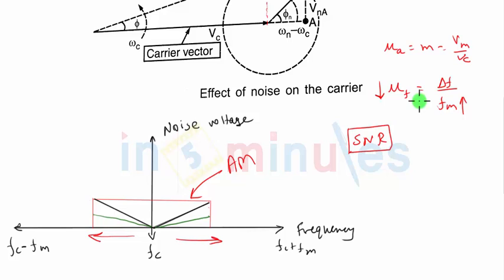So if the modulation index is low, the effect of noise will be more. That's the noise triangle, and it gives us the important conclusion that the effect of noise will be high on higher modulating frequencies in case of FM and less on lower modulating frequencies. Exactly for this reason, we carry out the process of pre-emphasis and de-emphasis in the FM communication system.